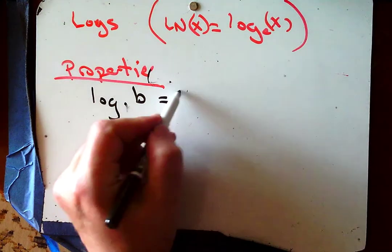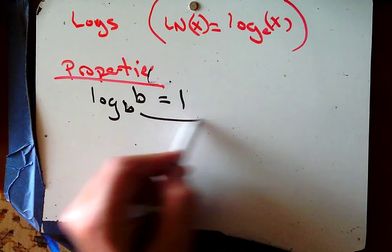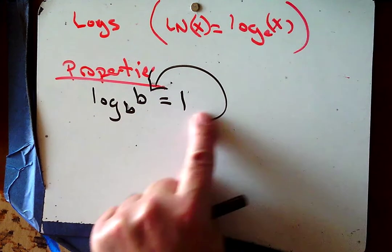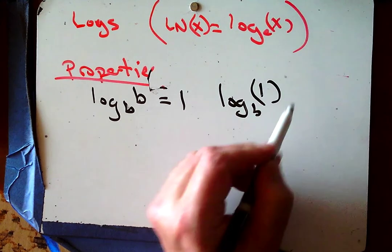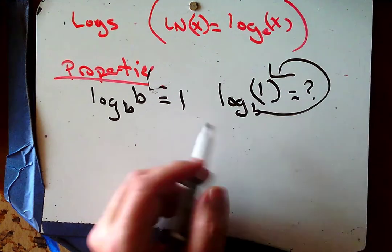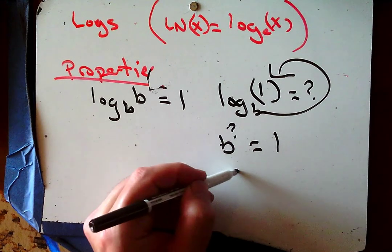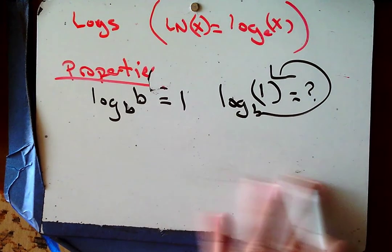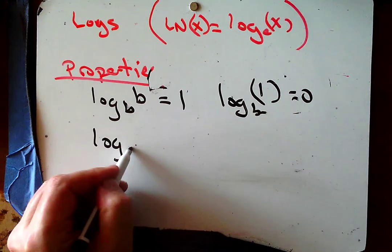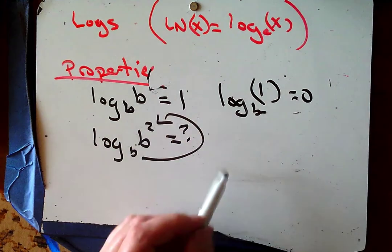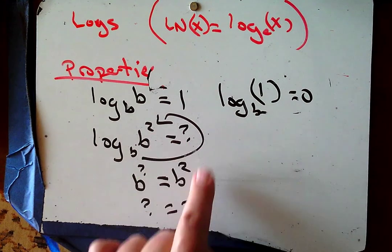Scorpion tail is the way we go from logs to exponentials: base, power, answer. What about log base b of 1? B raised to what power equals 1? That happens when the question mark equals 0. And for log base b of b squared, scorpion tail shows b to the question mark equals b squared, so the question mark equals 2.